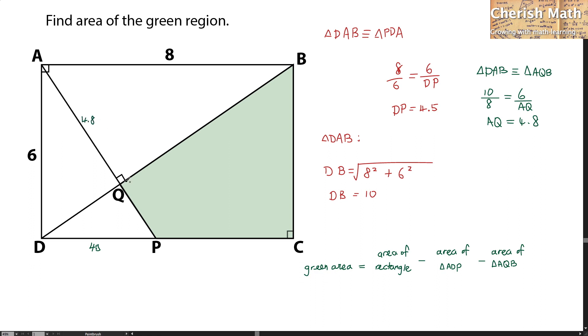And now, I want to find the length of BQ by using the Pythagorean theorem. That is the square root of 8 squared minus 4.8 squared, and that is going to give us 6.4 as the length of BQ. I have all information on the side lengths to be used for the calculation of the green area.